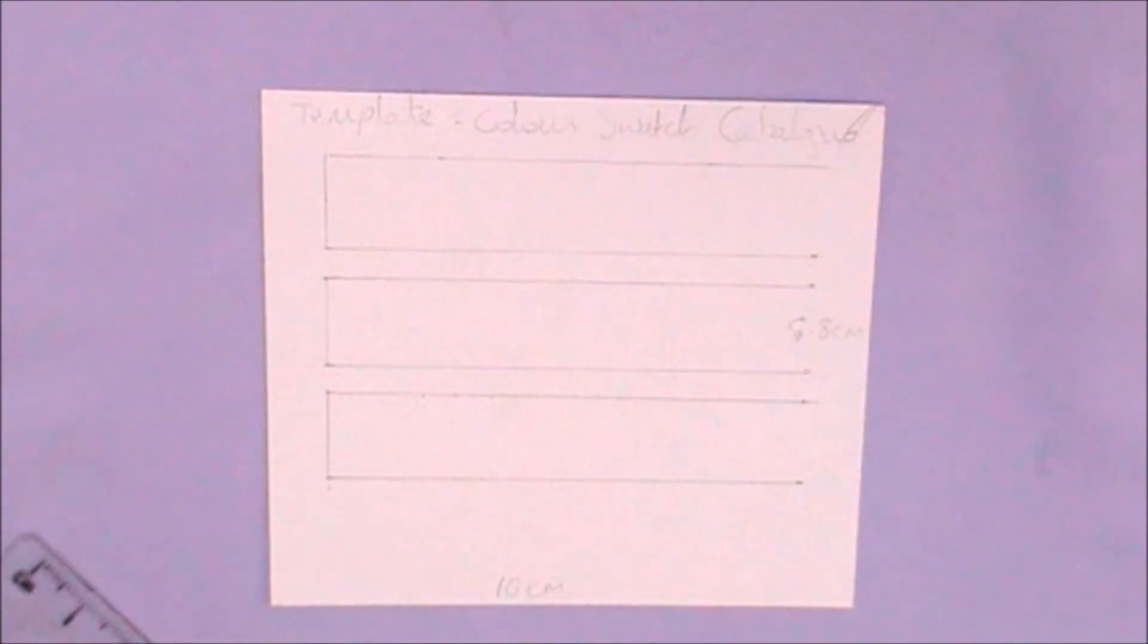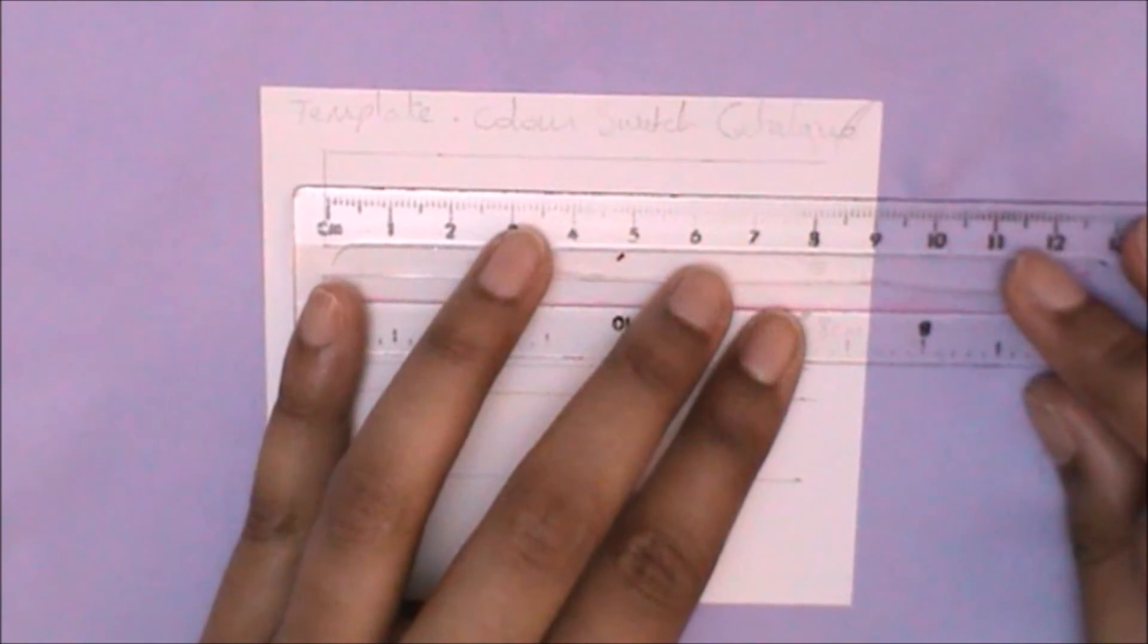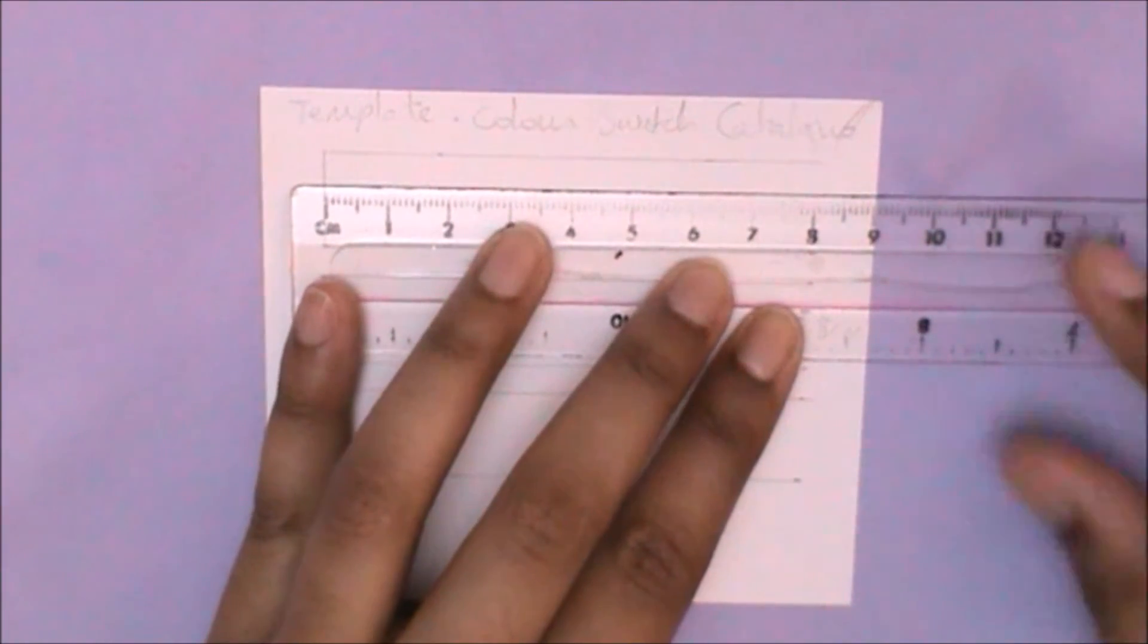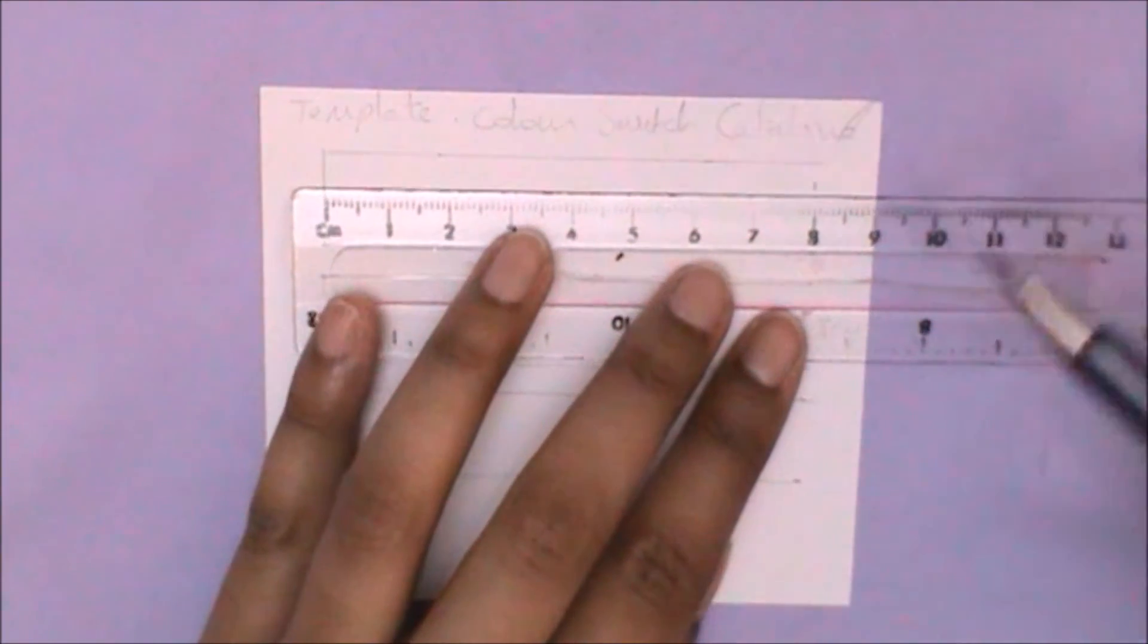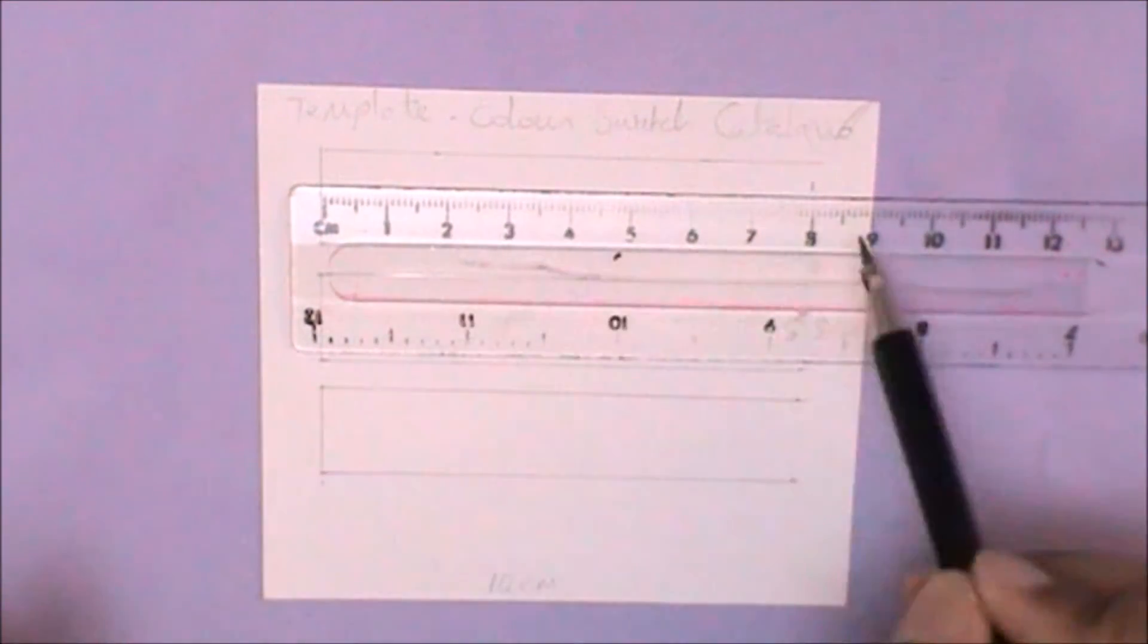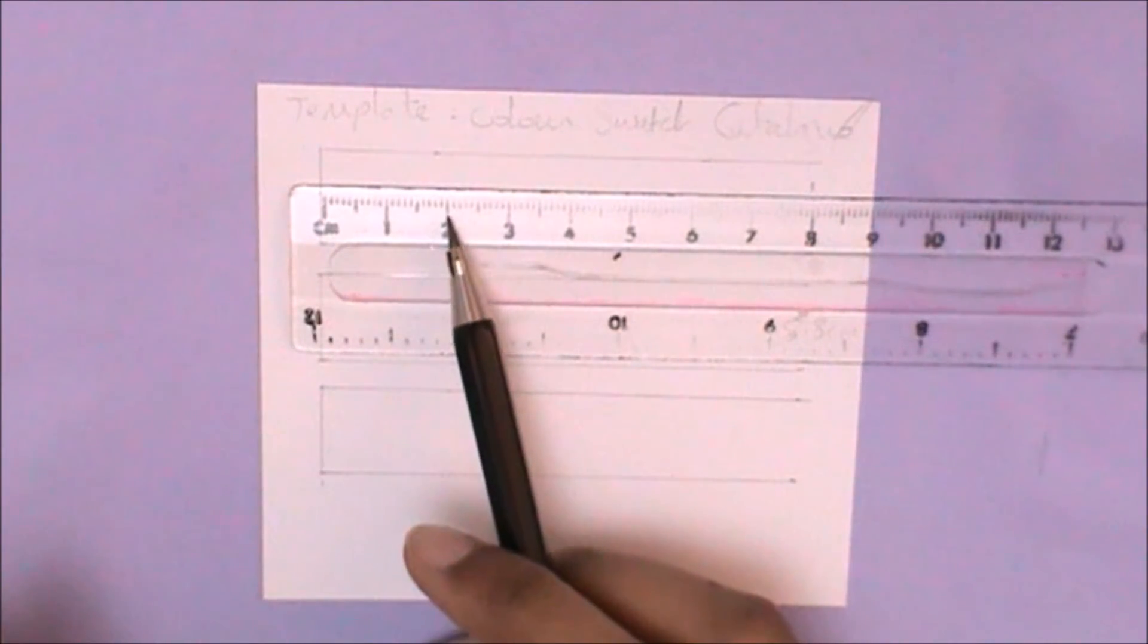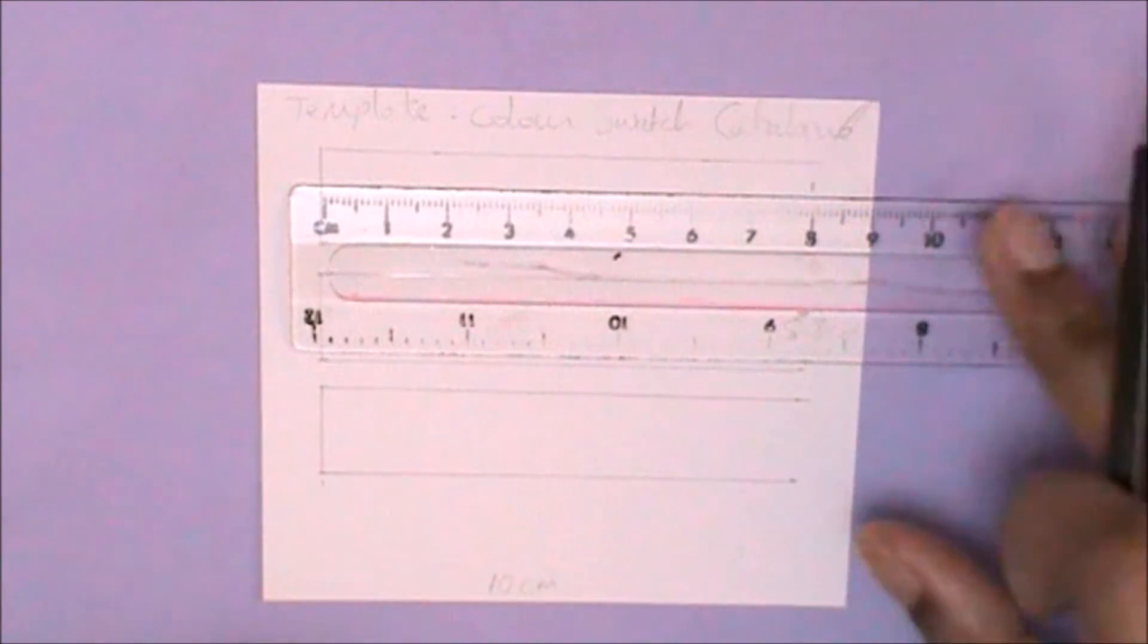Now something that I forgot to do is measure across by 8 centimeters. I should have mentioned that before. 8 centimeters is the perfect length because then we're going to divide this long rectangle into 2 centimeters each time. So 2, 2, 2, and that will give us 4 equal squares.